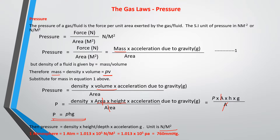In the discussion of pressure, we also look at atmospheric pressure — the pressure of the atmosphere on any object under its influence. One atmosphere equals 1.01325 × 10⁵ Newton per meter squared. Other units of pressure include Pascal and millimeter of mercury. One atmospheric pressure equals 760 millimeters of mercury. The instruments for measuring pressure are the manometer and the barometer.